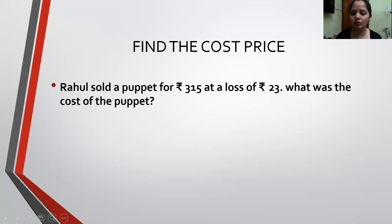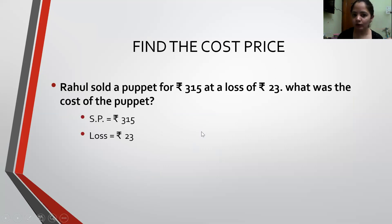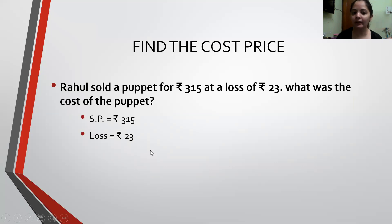The example says: Rahul sold a Puppet for Rs. 315 at a loss of Rs. 23. What was the cost of the Puppet? In the question, the Selling Price is Rs. 315 and the Loss is Rs. 23. We are asked to find the Cost Price. Since it is a Loss, that means Cost Price is more than the Selling Price.